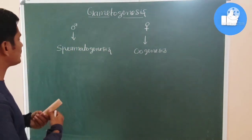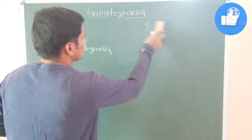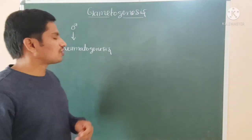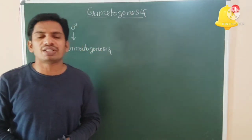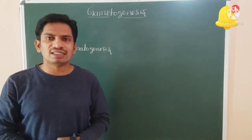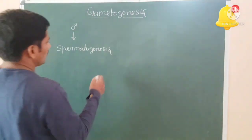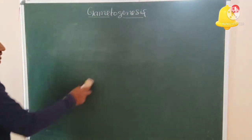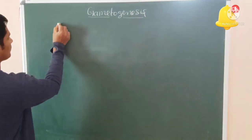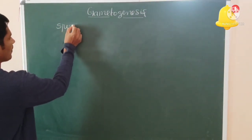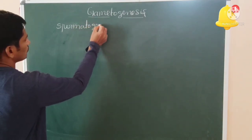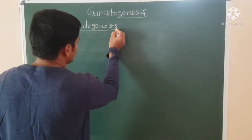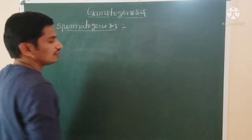Spermatogenesis takes place in the male. The diploid spermatogonia, by the process of spermatogenesis, is going to convert into haploid sperm cells. Spermatogenesis can be characterized into four stages.